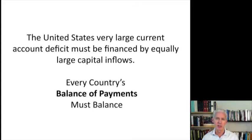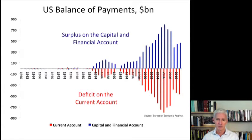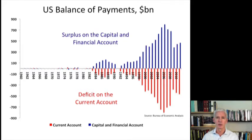Keep in mind that every country's balance of payments has to balance, so the bigger the U.S. trade deficit becomes, the bigger the capital inflows into the U.S. will also become. As you can see here, the larger the U.S. current account deficit became — the red bar — the larger the U.S. surplus on its capital and financial account became. The current account deficit has to be completely offset by the surplus on the capital and financial account, and in this chart, you can see that it was.